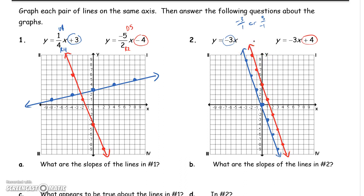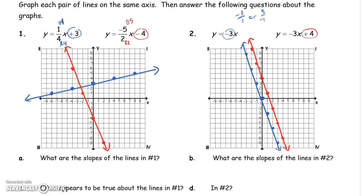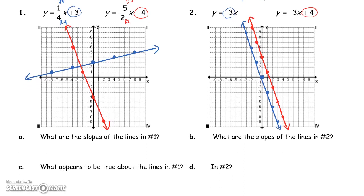So let's answer the following questions about the two graphs. What are the slopes of the two lines in graph number 1, or in problem number 1? Well, my first line, the blue line, had a slope of 1 fourth. My second line, my red line, the slope was negative 5 over 2.